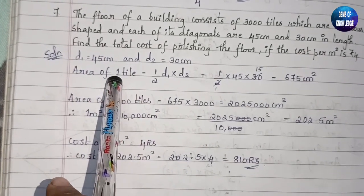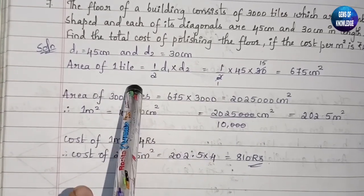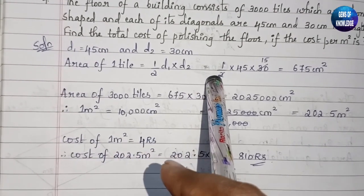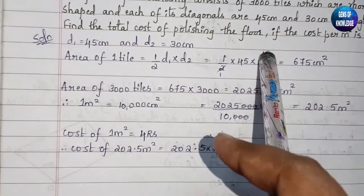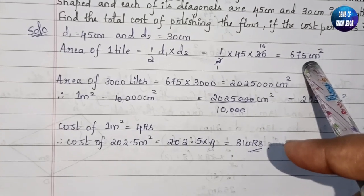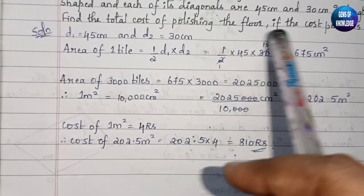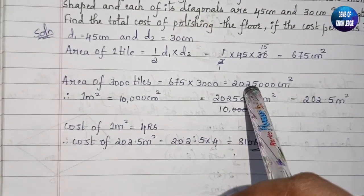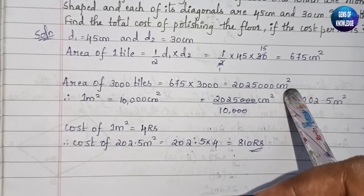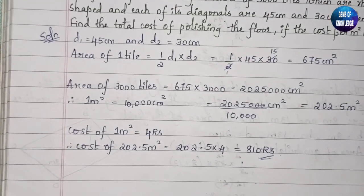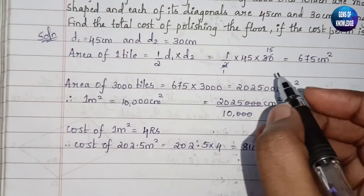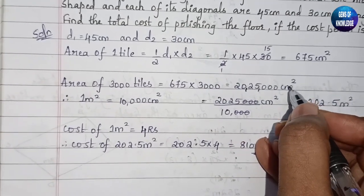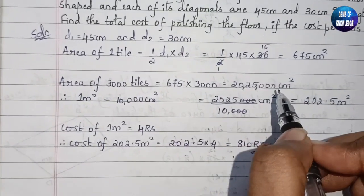d1 is 45 cm and d2 is 30 cm. Area of one tile = half into d1 into d2 = half into 45 into 30. Cancelling 2 and 30 gives 15, so 15 into 45 equals 675 centimeter square. Area of 3000 tiles = 675 into 3000 = 20,25,000 centimeter square.